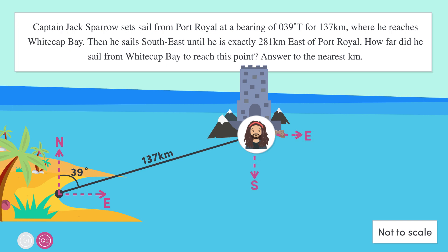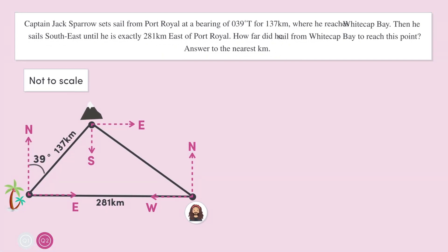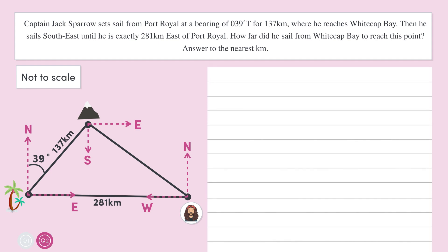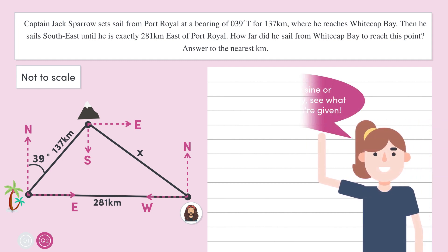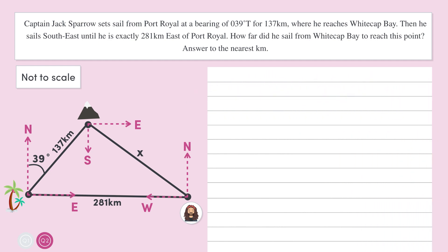From here, he sails southeast until he is directly east of Port Royal. And we're told that this distance is 281 kilometers. Then we're asked to find this distance here. So let's label our unknown side x and let's see if we can use any of our trig ratios to find x. Well, at the moment, we don't have enough information to use either our sine or cosine rule to find x. So we need to go back to our diagram to figure out if there's any way we can get any extra information out of the question.